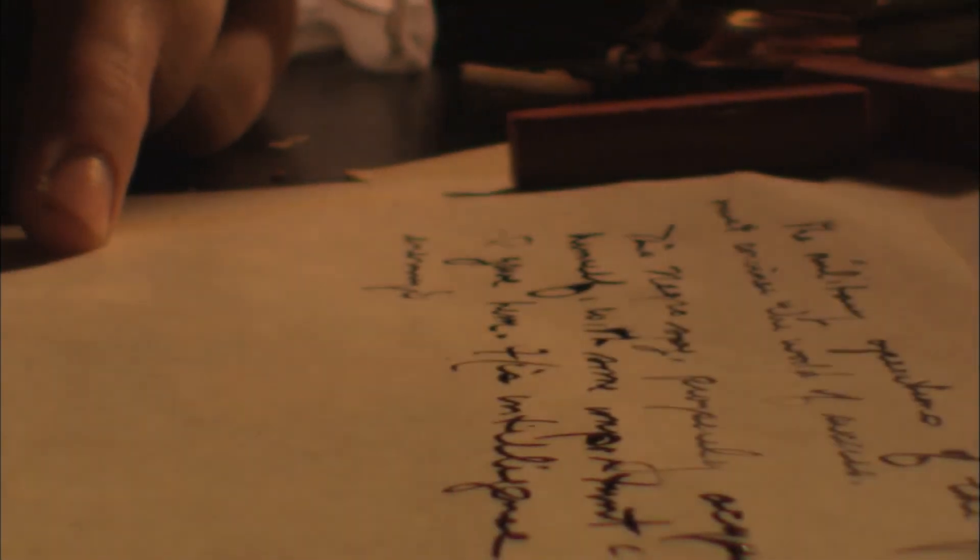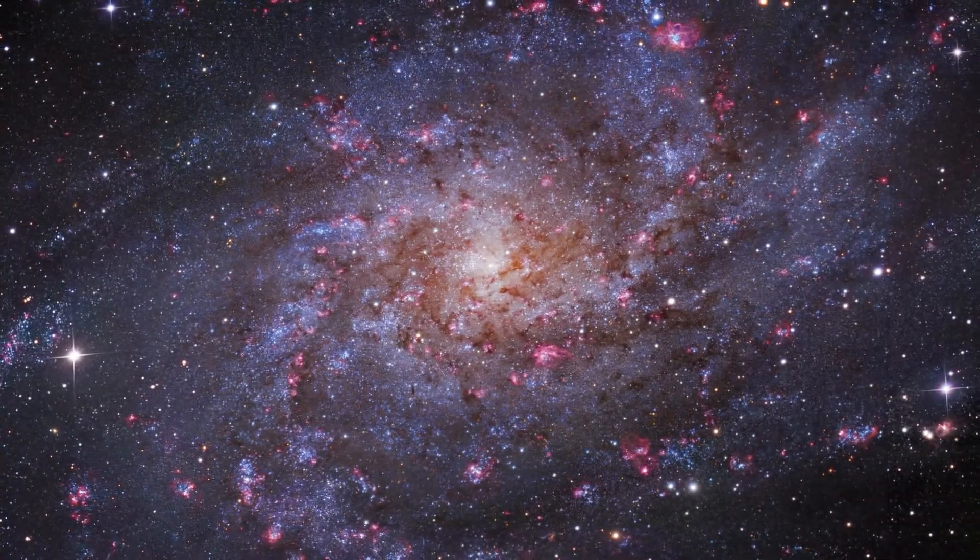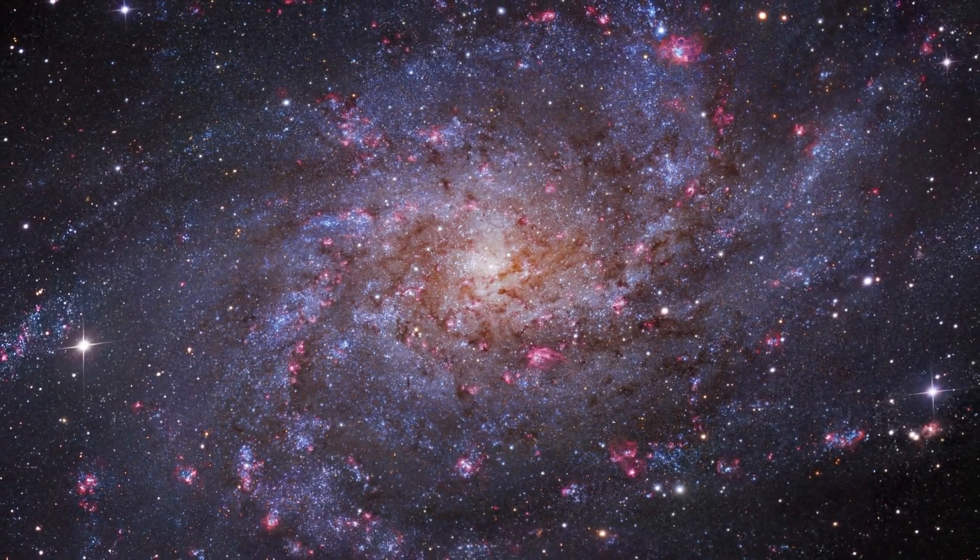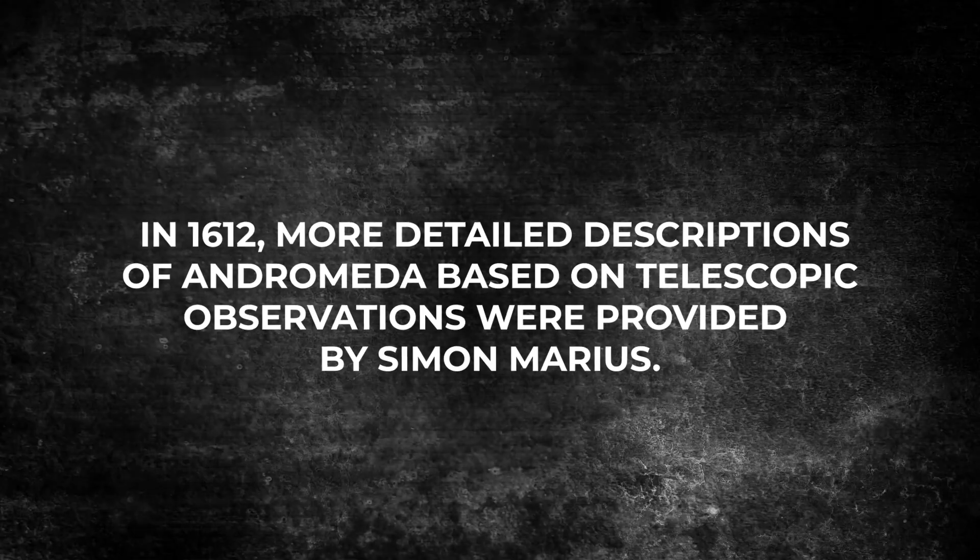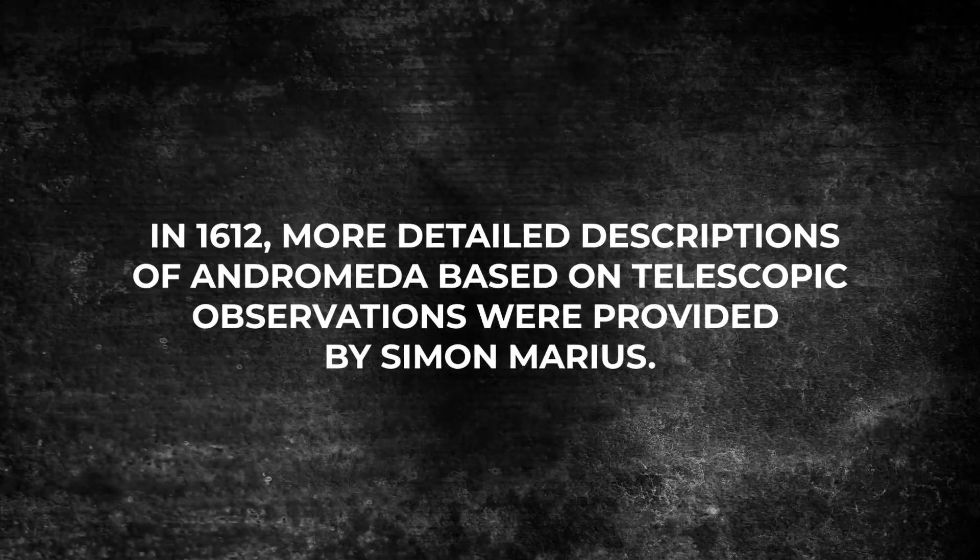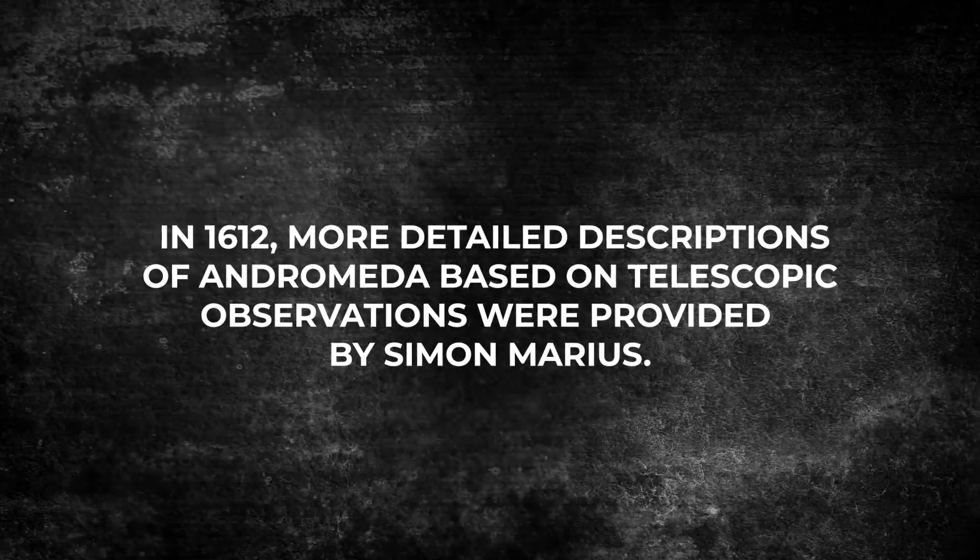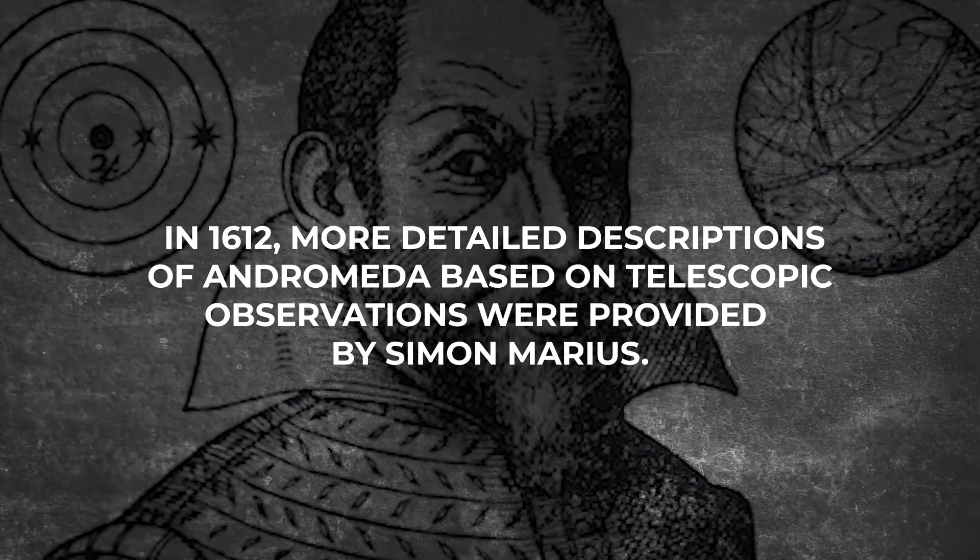While his description was limited, it laid the foundation for future astronomers to study Andromeda in more detail. In 1612, more detailed descriptions of Andromeda based on telescopic observations were provided by Simon Marius.